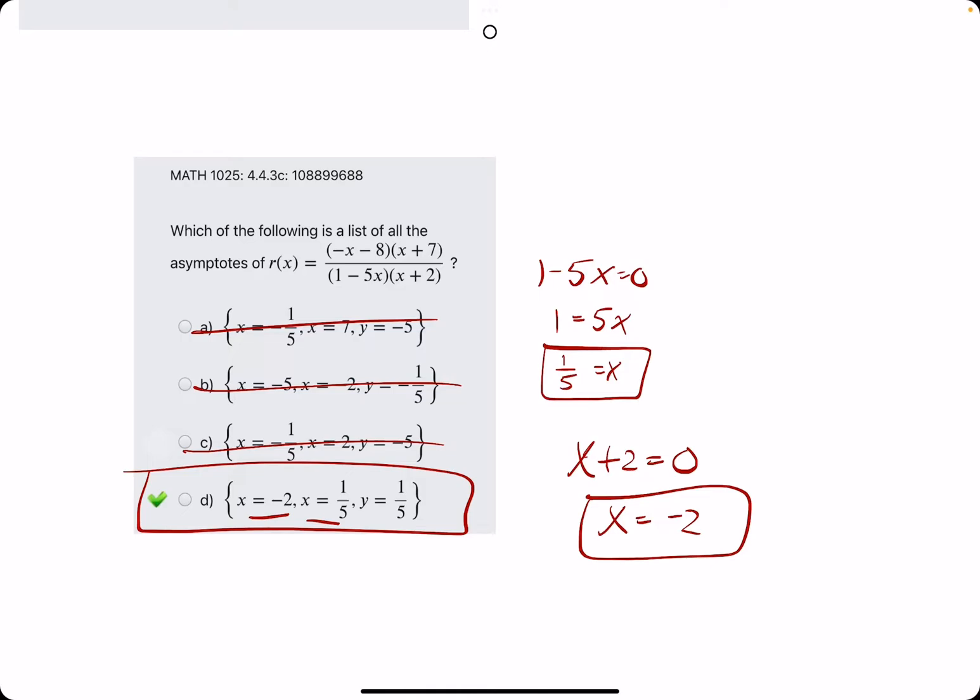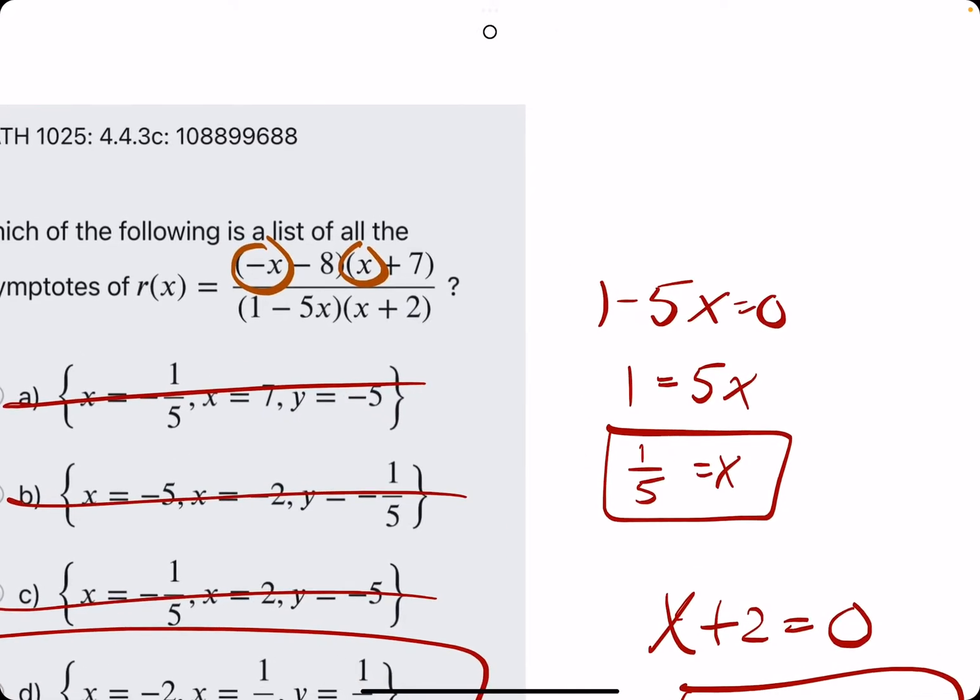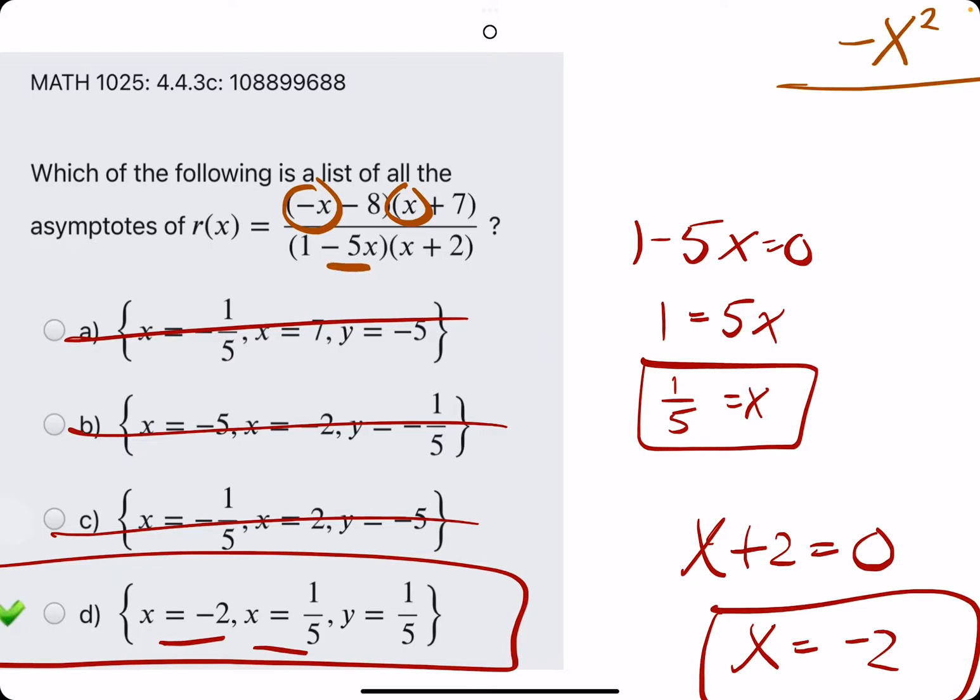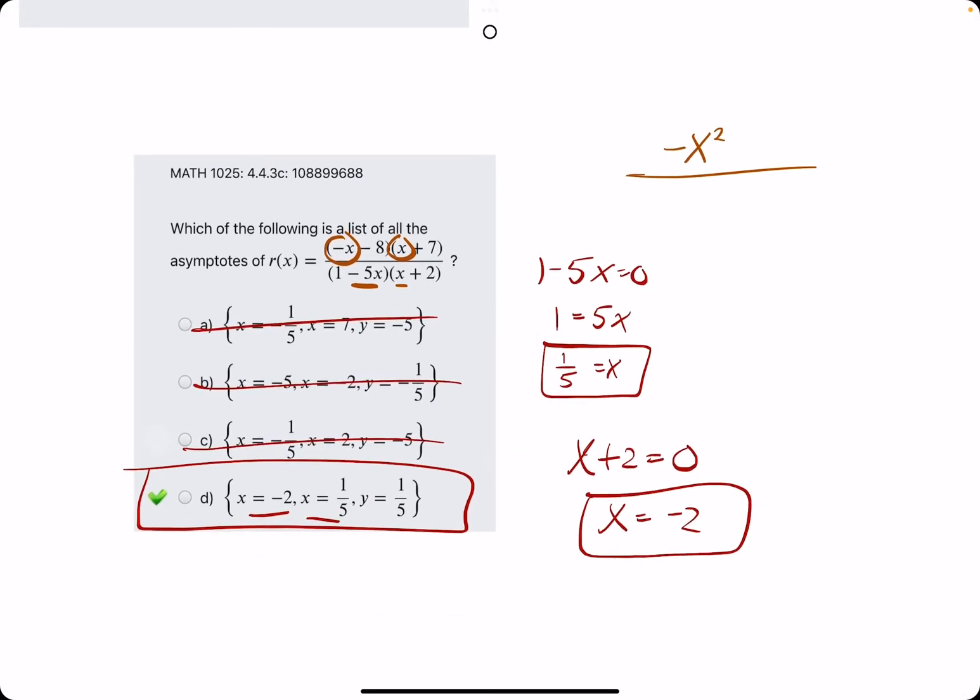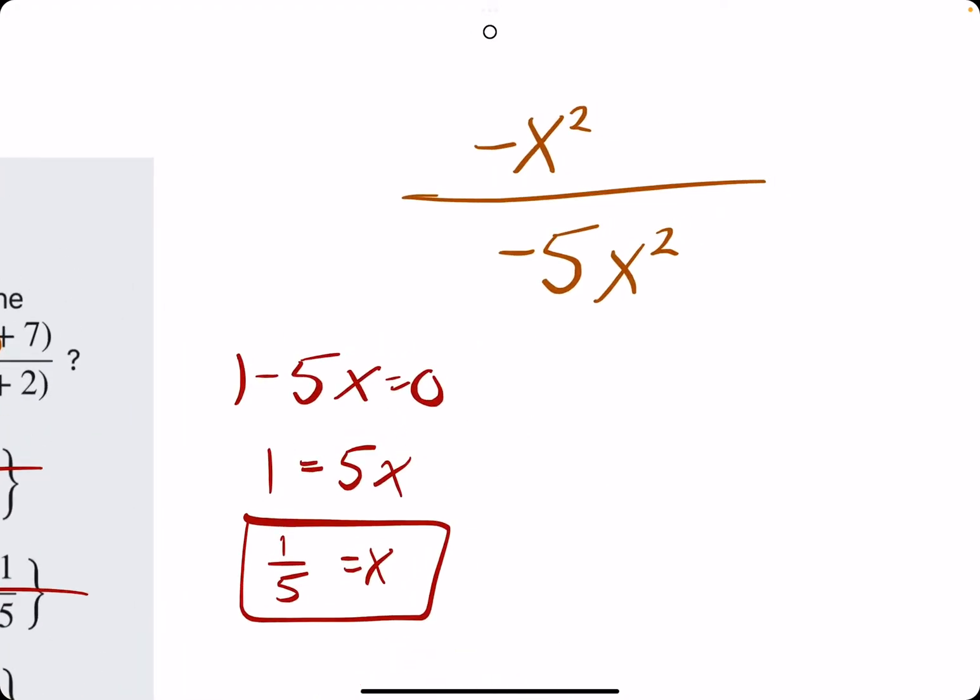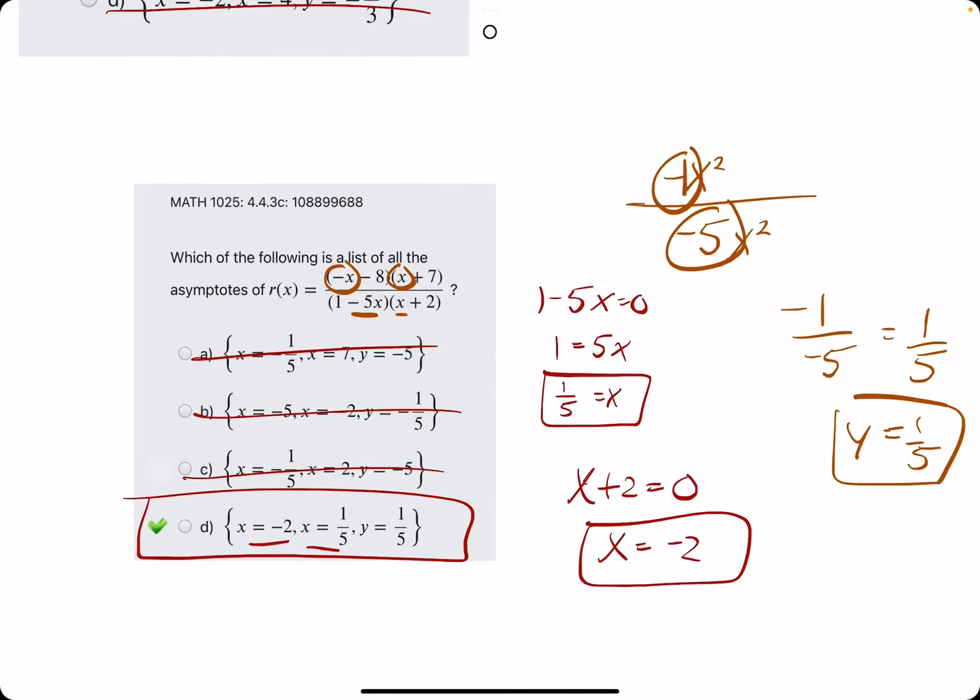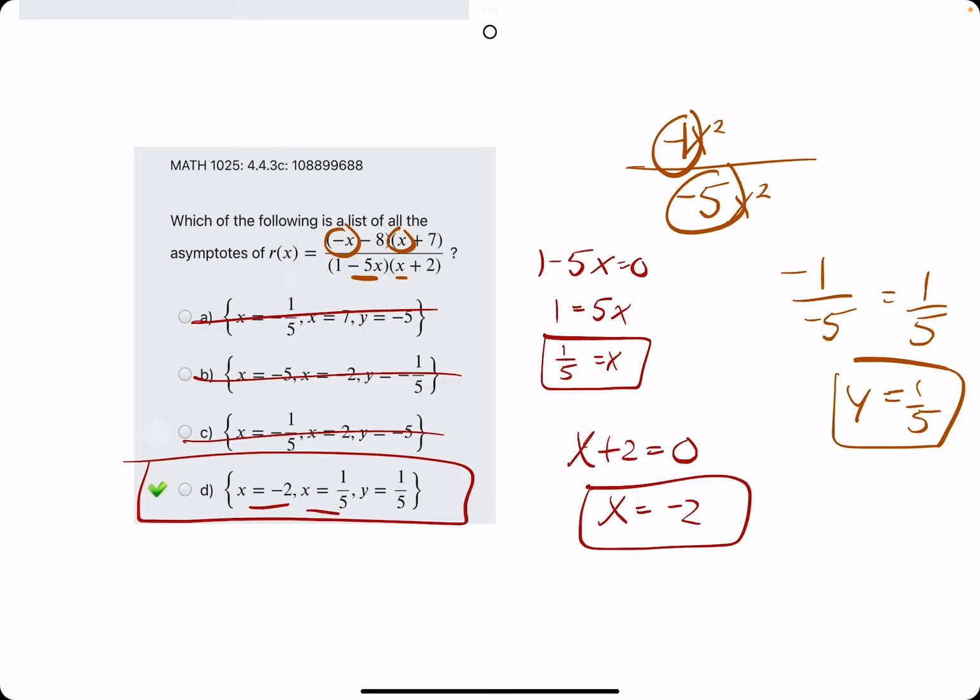And then when we expand the numerator terms, namely the x terms, if we do the same with the denominator, we have negative 5x times x. Remember, our goal is to find the x squared term, identify what that x squared term is, so we can identify what the coefficients of the x squared terms are. So negative one over negative five is equivalent to just one-fifth. So y equals one-fifth is our horizontal asymptote, and that matches.